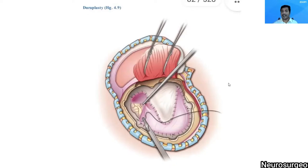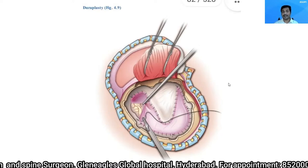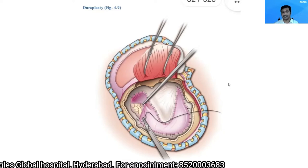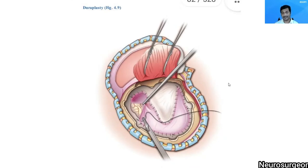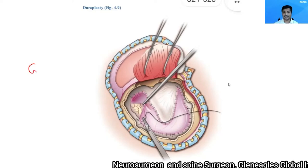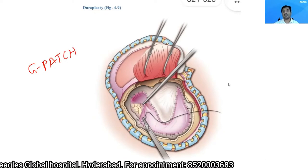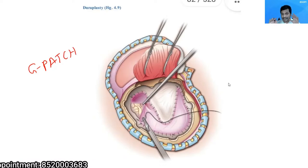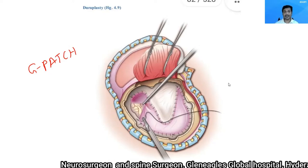Once I have done my procedure, I complete the duroplasty. I will either use the pericranium which I harvested before — or if I was not able to raise the pericranium intact, or if the pericranium is badly torn because of trauma, which happens more frequently in traumatic brain injuries, I sometimes use an inner layer of galea, which is a robust layer to complete the duroplasty. Sometimes we also use artificial patches like G patches, which are commercially available. There are also surgeons who don't close the dura and instead place Avitene over it, which forms a layer over time — this is surgeon's preference. I prefer to close it.